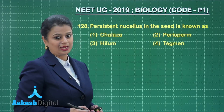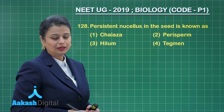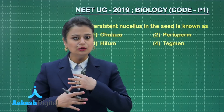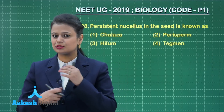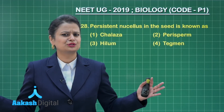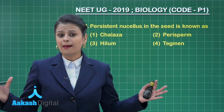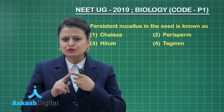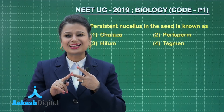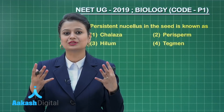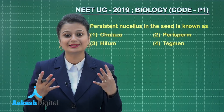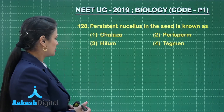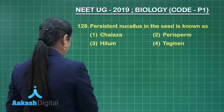Question 128: persistent nucellus in a seed is known as what? Generally, the nucellus is consumed as it is a nutritive tissue. But in some cases, like in beetroot and castor, remains of the nucellus are present in the seed. What do you call this structure?